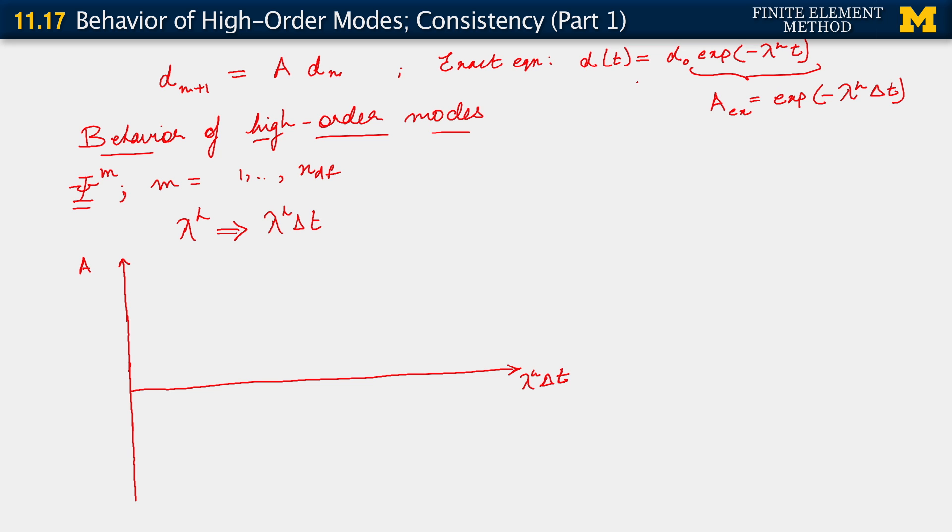The idea is that you could take this exact equation, simply write it out as a mapping from d n to d n plus 1, and then you will see that the amplification factor you get is exactly the exponent of minus lambda h delta t. So that's just an exponentially decaying function. So let's write that one out first. We see that the amplification factor can have a maximum value of 1. The exact amplification factor. And I'm going to try to draw an exponentially decaying function.